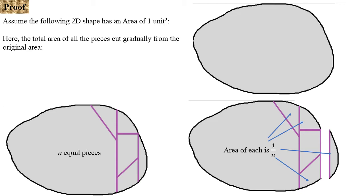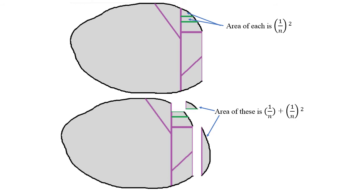Now I take any one from the remaining part and split it into another n pieces. Obviously, if this is 1 over n, the area of each is 1 over n squared. The sum of those two areas is equal to 1 over n plus 1 over n squared.